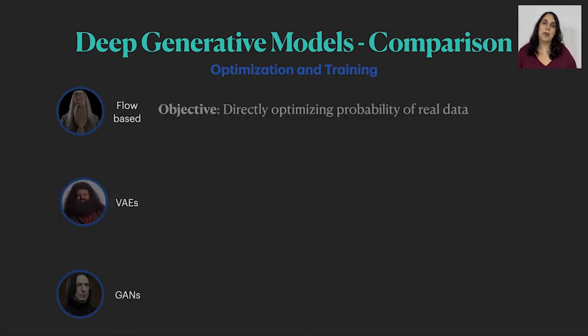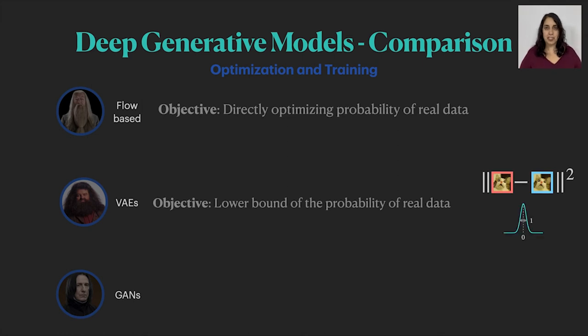Optimization wise, we already know that flows optimize our holy grail, which is the probability of real data, while VAEs approximate it using a reconstruction and regularization term that has a tradeoff between each other. GANs optimize minimax on the classification loss. The optimum solution for this optimization is being reached in Nash equilibrium, which is very unstable.